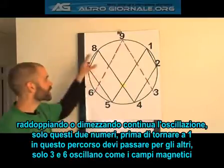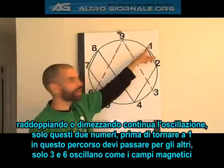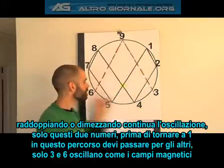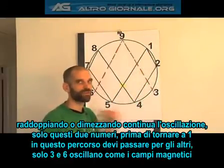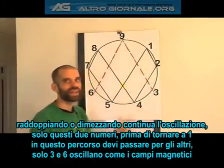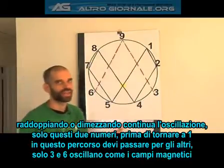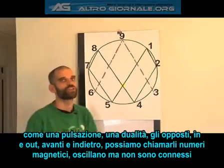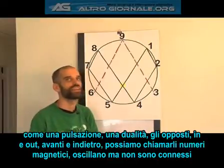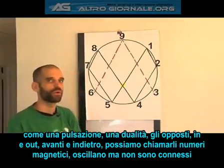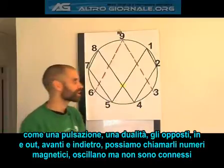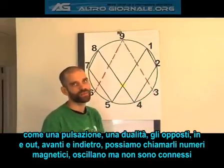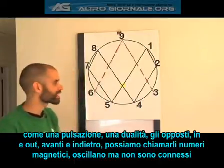None of the other numbers do that. Before you can get to another one on the doubling path, you've got to come all the way through the other numbers. Only three and six are oscillating back and forth, just like magnetic fields — like a pulse, like a representation of duality of opposites. In and out, to and fro, back and forth. That is how the three and six work. We could call them magnetic numbers.